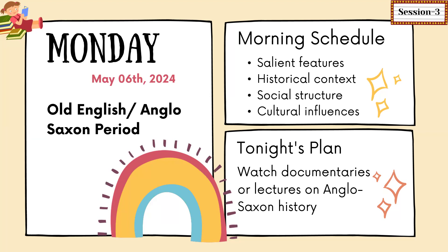If you don't have any time, just follow this schedule. The morning time can be one hour, thirty minutes, or at least ten minutes — you must spend some time for your preparation, depending on you. On the first day, focus on the salient features of the Old English Anglo-Saxon period: its historical context, social structure, and cultural influences. This is your morning schedule.